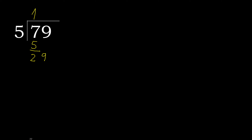Next: 29. 5 multiplied by 6 is 30 — 30 is greater. 5 multiplied by 5 is 25. 25 is not greater. 29 minus 25 is 4.